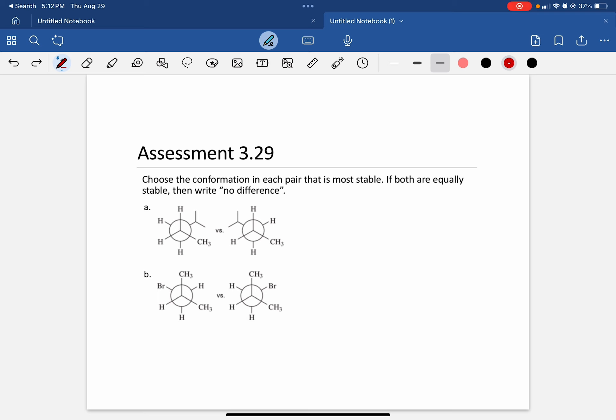That's not the case for either of these. Both of these do have one that is more stable than the other. For letter A, I see right here two large groups. We have an isopropyl group and then we have a methyl group, CH3, right up against each other. That's the gauche conformation.